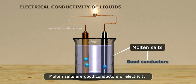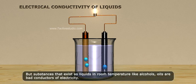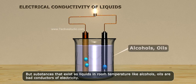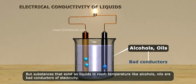Molten salts are good conductors of electricity, but substances that exist as liquids at room temperature, like alcohols and oils, are bad conductors of electricity.